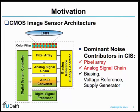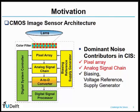This picture shows the typical CMOS image sensor architecture. From this figure, we can find several dominant noise contributors in the CMOS image sensor. The first one is the pixel array, which is used to sense light. After that is the analog signal chain, together with its biasing voltage reference and supply generator. In this work, we will mainly deal with the noise problem in the pixel array and analog signal chain.